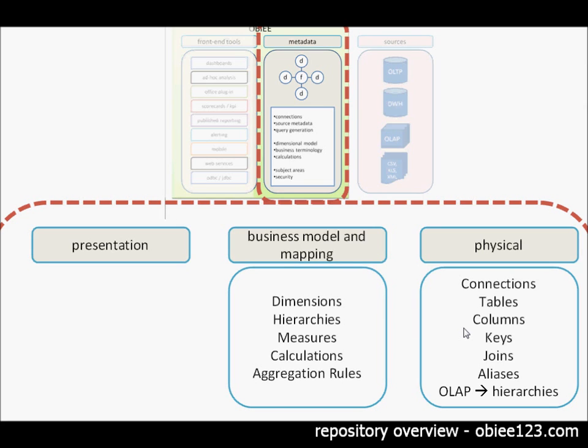The business model and mapping layer contains the business model and this is a dimensional model so it consists of objects like dimensions, hierarchies, measures, calculations, and aggregation rules.